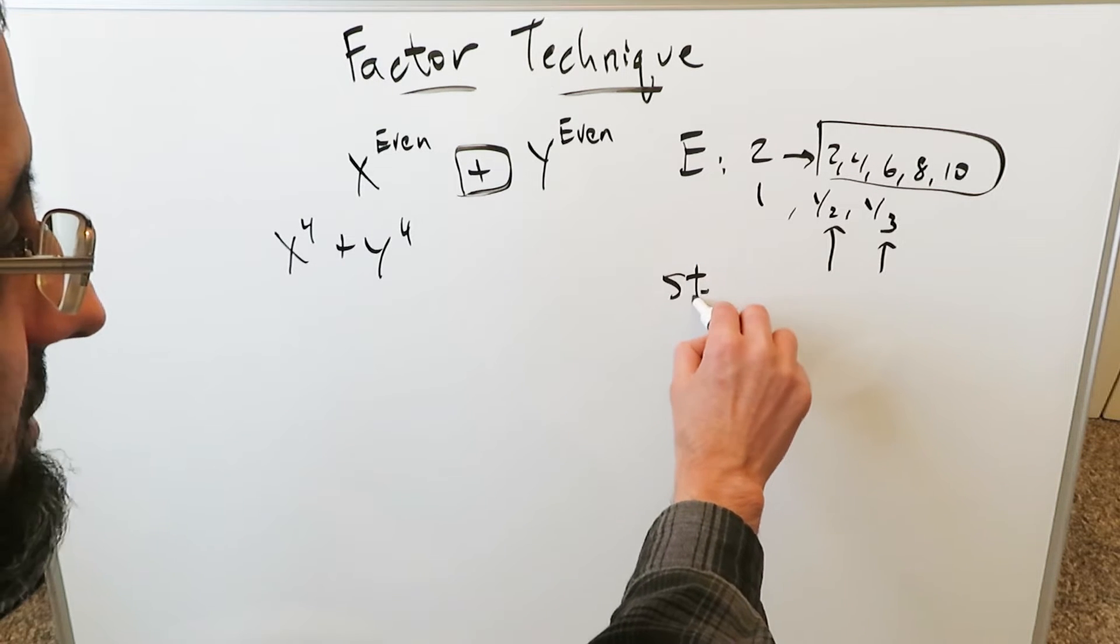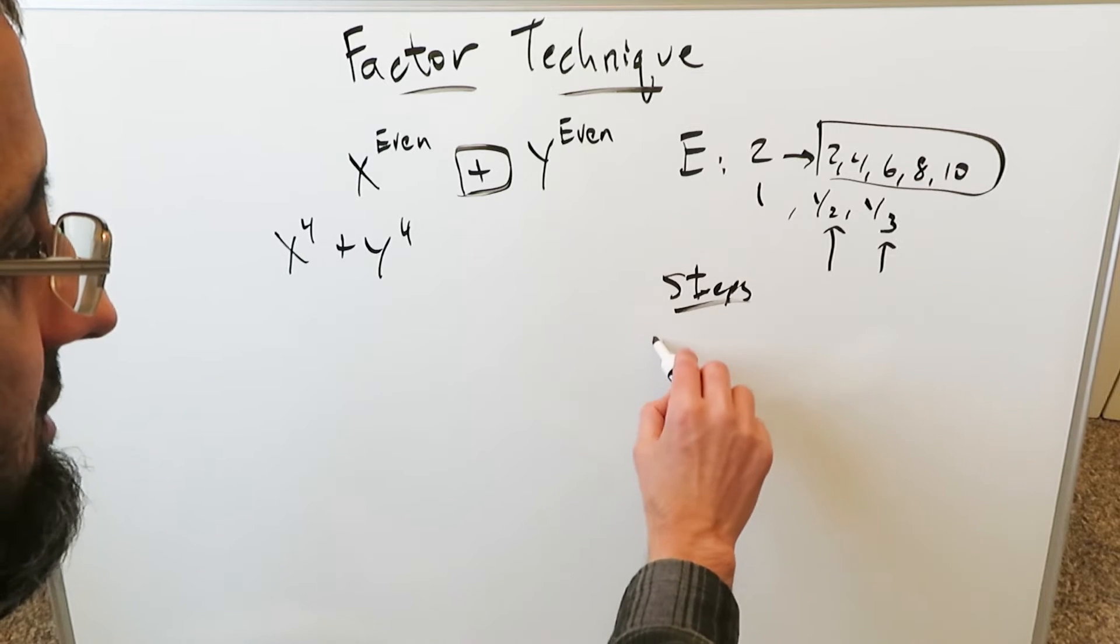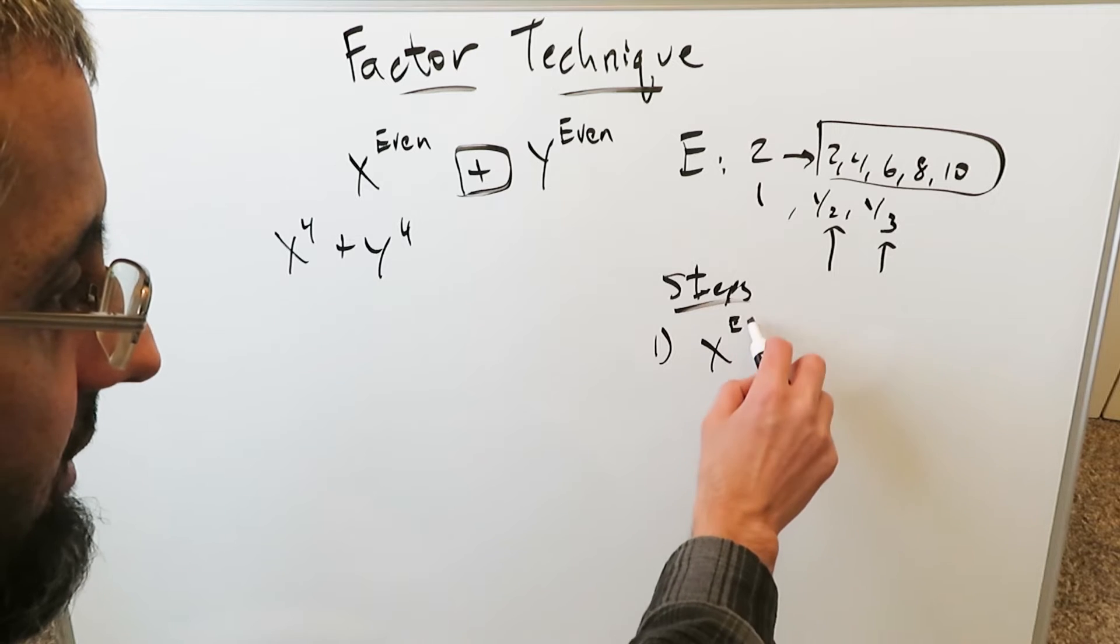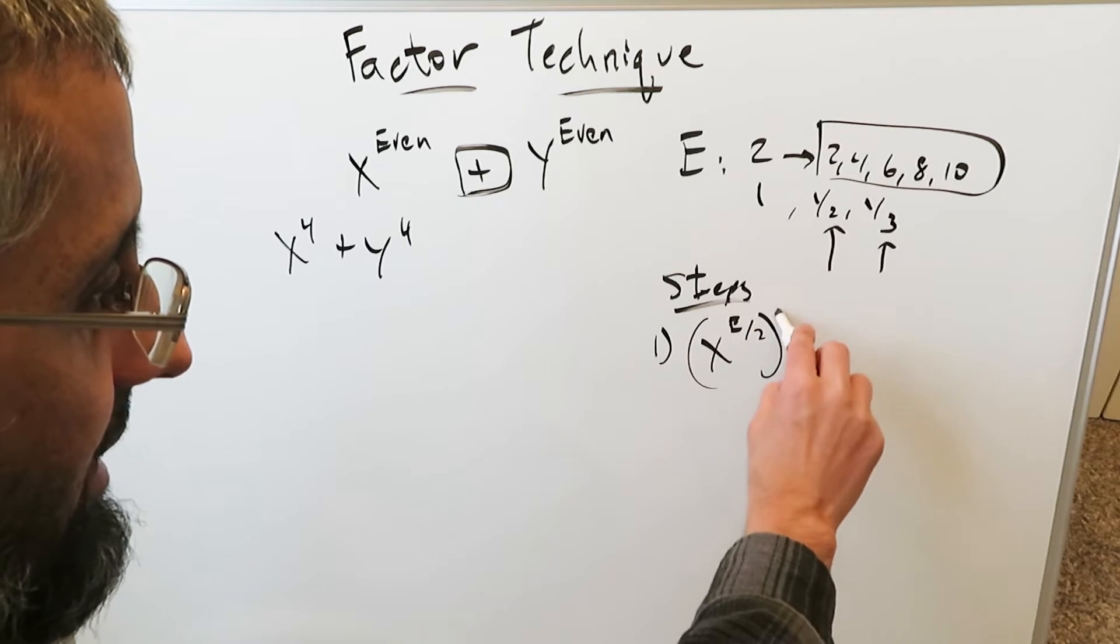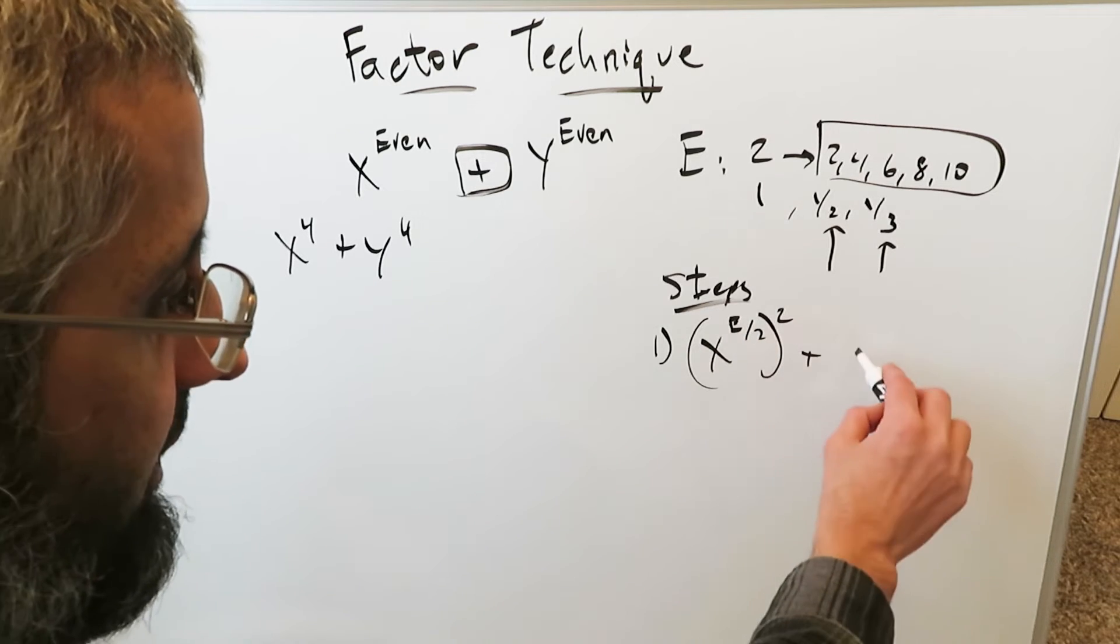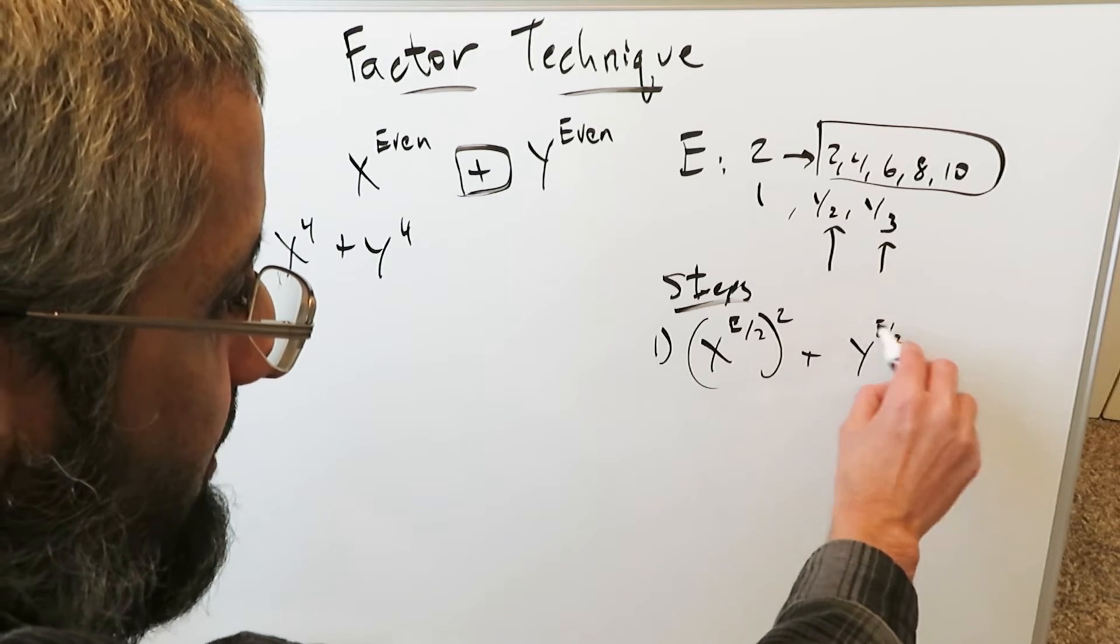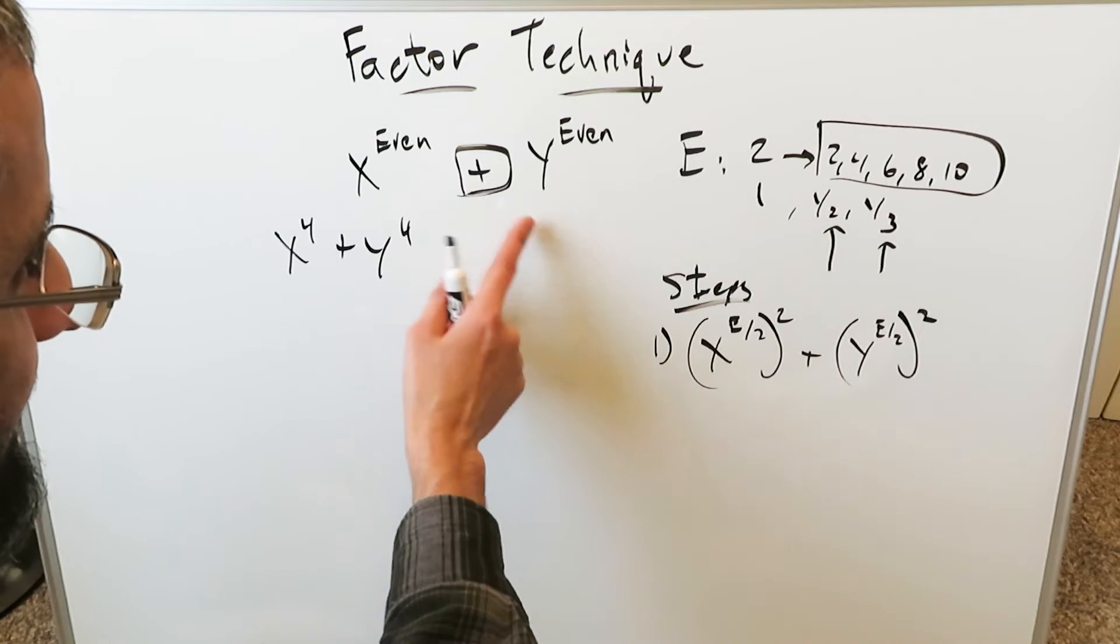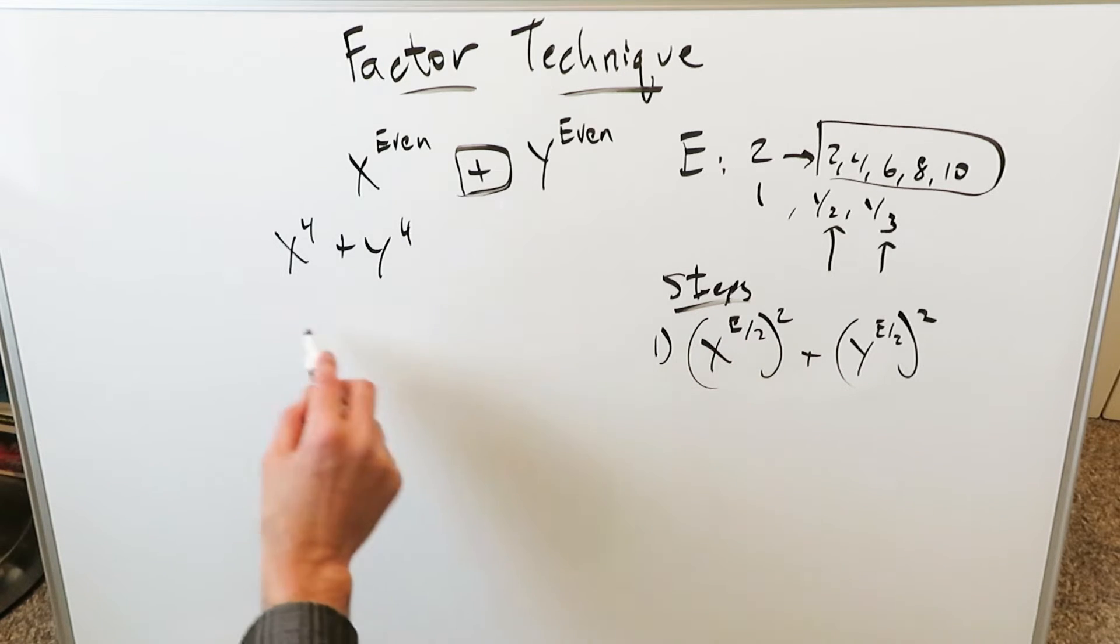What are your steps? Your first step would be this. You take that even exponent, and I'm going to use e as my capital. You divide it by 2, and then you write it in this form. You square. You'll do your even exponent, divide it by 2, and you square. But if you were to open it up, the 2 and the 2 would cancel out. You'd end up exactly where you are, but that's the first step.